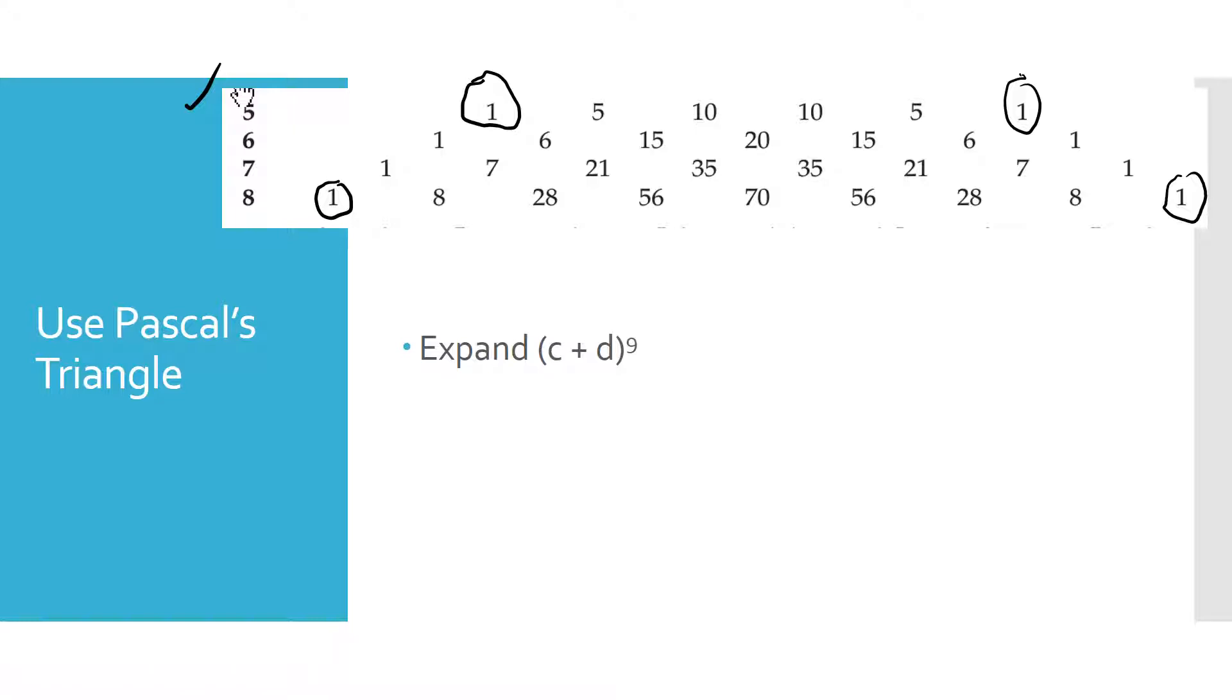And then the second number, and I'm going to work down here on the 8th power, you can see that if I take 1 plus 7, it equals 8. If I take 7 plus 21, take the row above, 7 plus 21 equals 28.